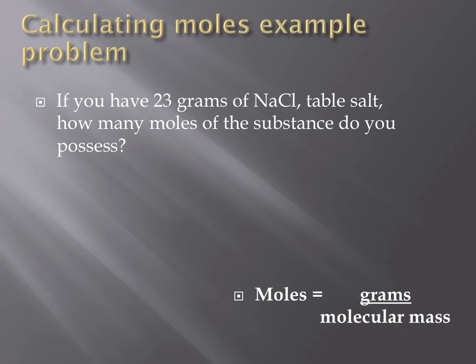In the first example problem, you will calculate the number of moles that you have. The problem states: if you have 23 grams of NaCl, or table salt, how many moles of the substance do you possess? To calculate the number of moles that you possess, you will have to divide the number of grams of the substance you possess by the molecular mass of that substance.